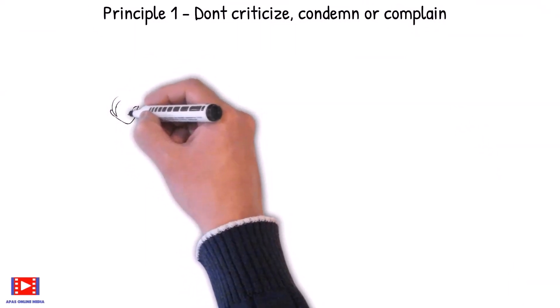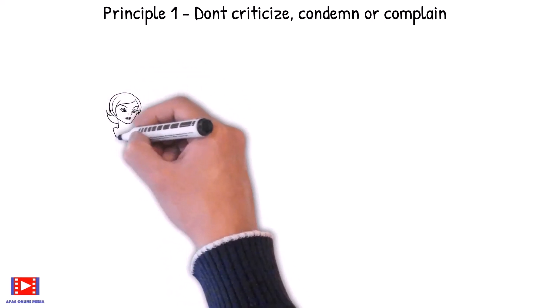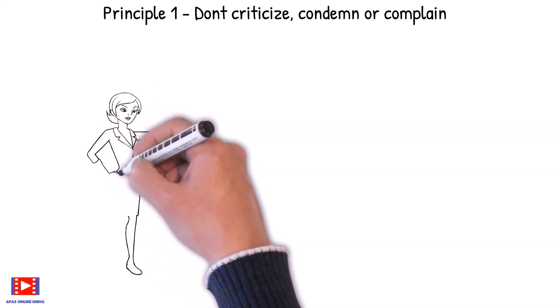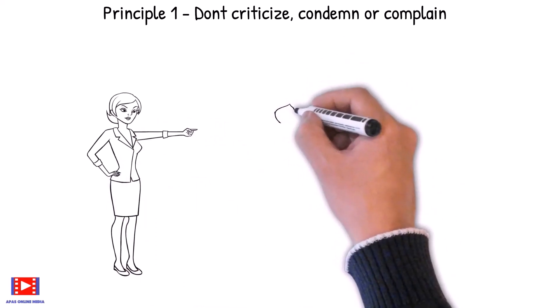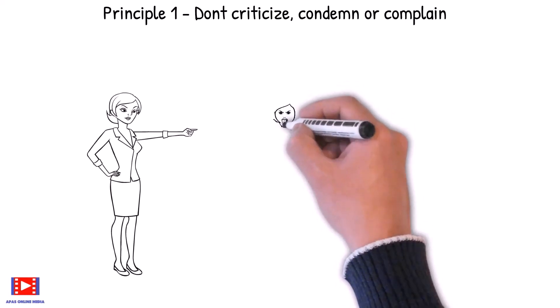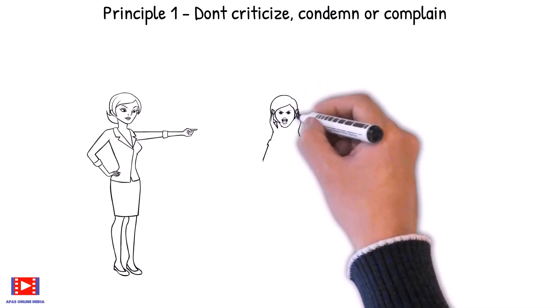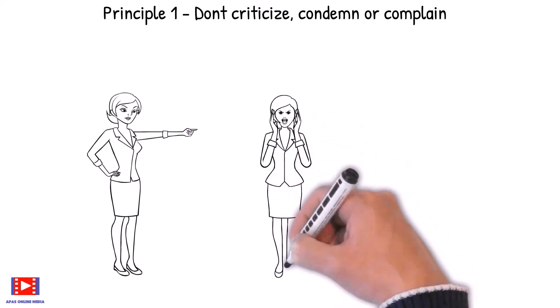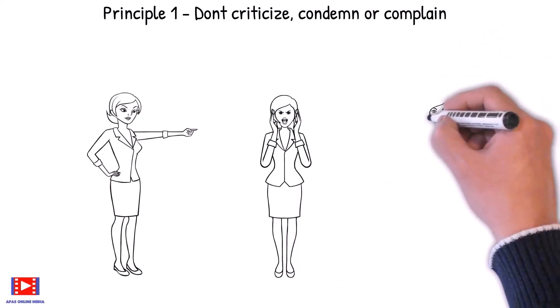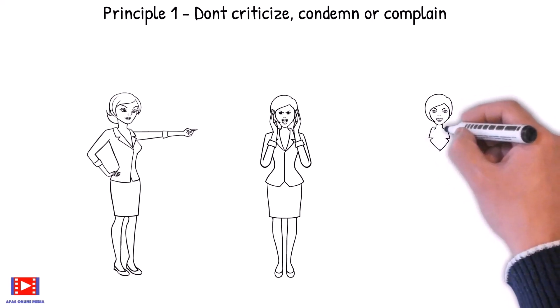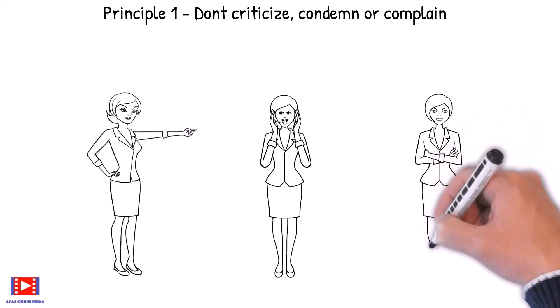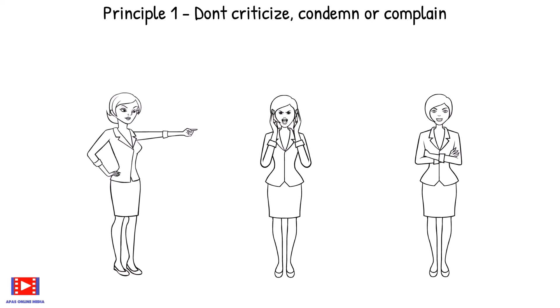Principle 1: Don't criticize, condemn or complain. Criticism is futile because it puts a person on the defensive and usually makes him or her strive to justify themselves. It is an expression of disapproval of someone or something on the basis of perceived faults or mistakes. Criticism is dangerous because it wounds a person's precious pride, hurts their sense of importance and arouses resentment.